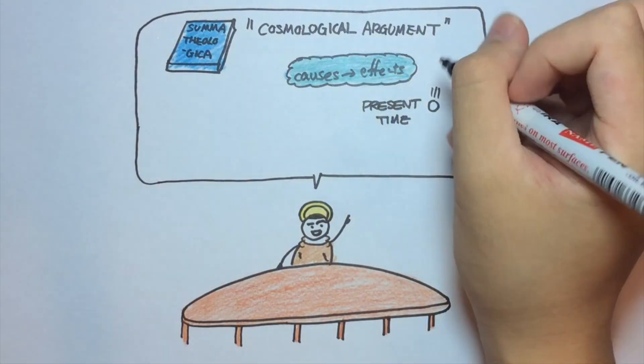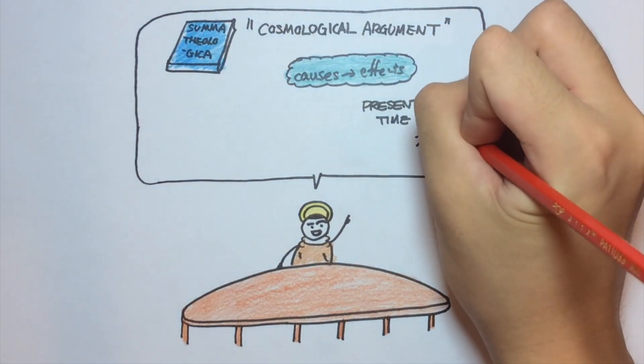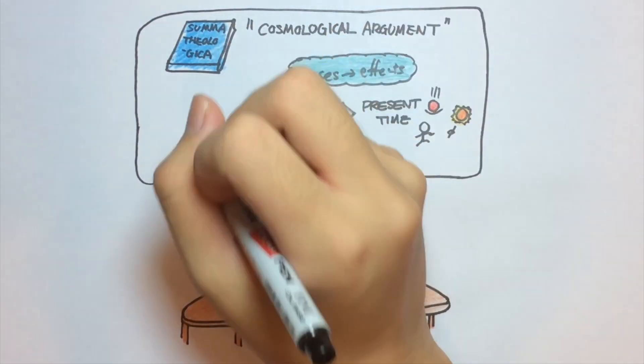My argument goes like this. Everything that we see in the universe right now, for example, the ball dropping when I release it, me walking, the sun shining, has a cause. Each of those causes have a cause of their own, and so on.